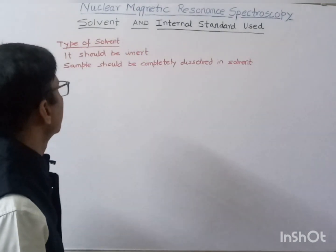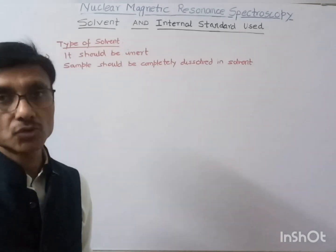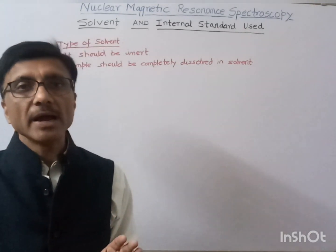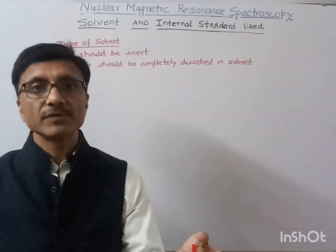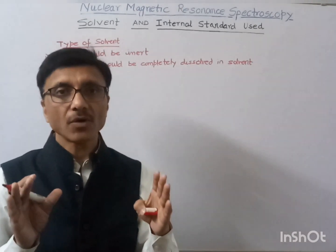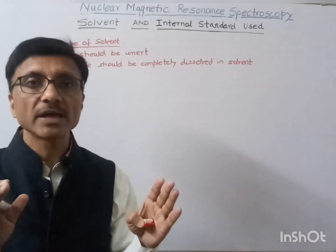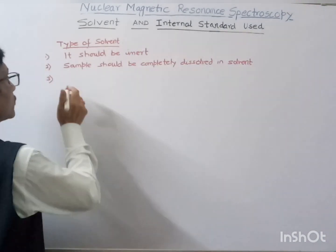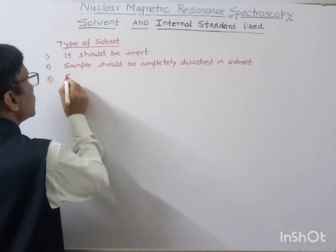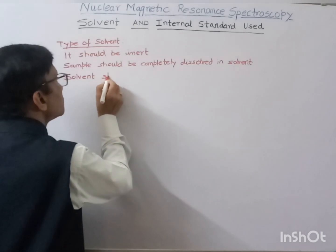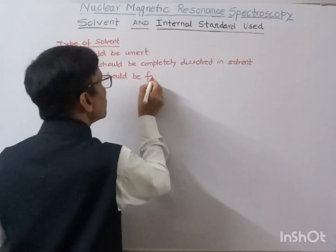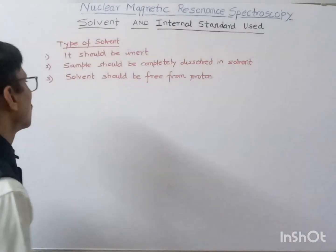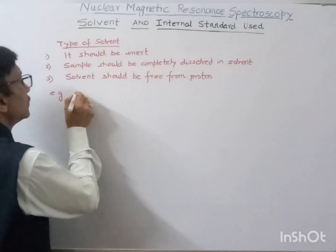Next, the solvent should be free from protons, or it should not have any hydrogen. Because here we are concerned with the proton NMR spectra, and if the solvent also contains some protons then it will show its own peak. We need the peak of only the sample, so the solvent should be free from protons. This is one of the most important features.